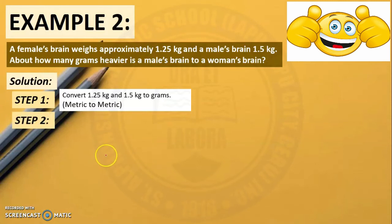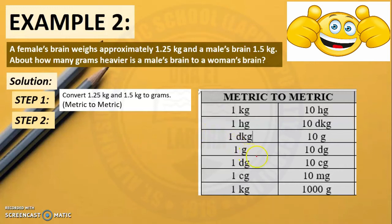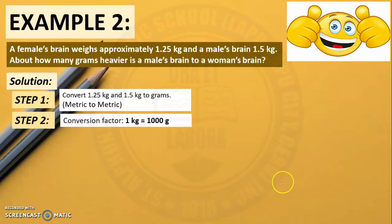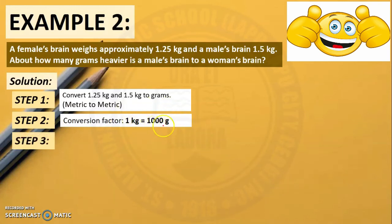Step 2: We need to find the appropriate conversion factor to be used. We will look at the conversion table for weight measurements, metric to metric. We find that 1 kilogram is equal to 1,000 grams. So our conversion factor is 1 kilogram equals 1,000 grams. Step 3: We need to write our conversion factor as a fraction, making sure the desired unit — grams — is in the numerator. So 1,000 grams will be our numerator and 1 kilogram will be our denominator.